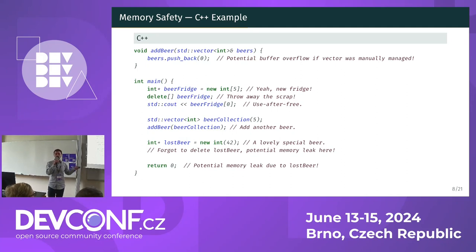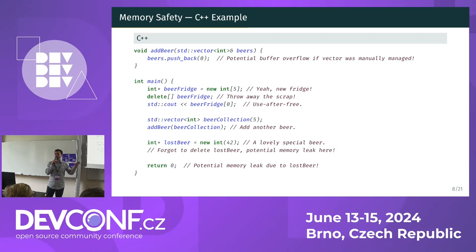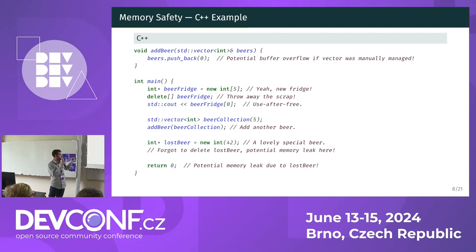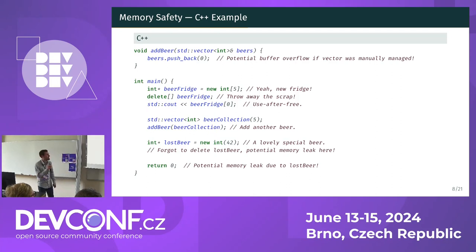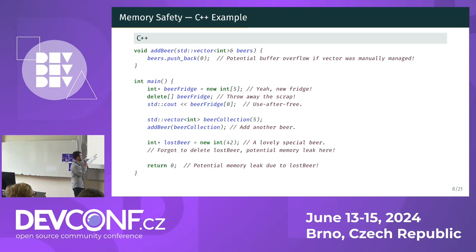The fridge broke down and you threw it away by using the delete construction, but then you try to grab a beer from a broken fridge. This is known as a use-after-free error. We start the party with a collection of five beers, then we add 10 more beers in the addBeer function and it's party time. In C++, there is a possibility of a memory leak if we forget to delete the last beer.